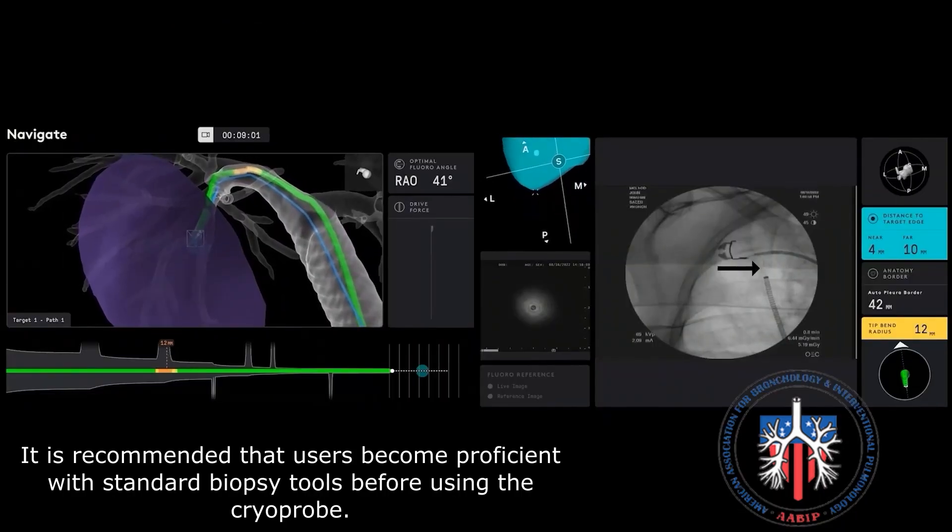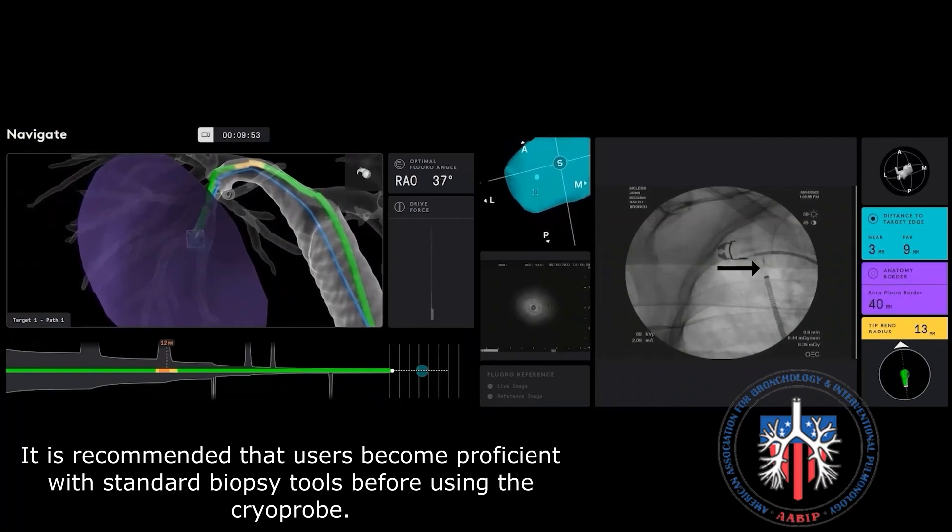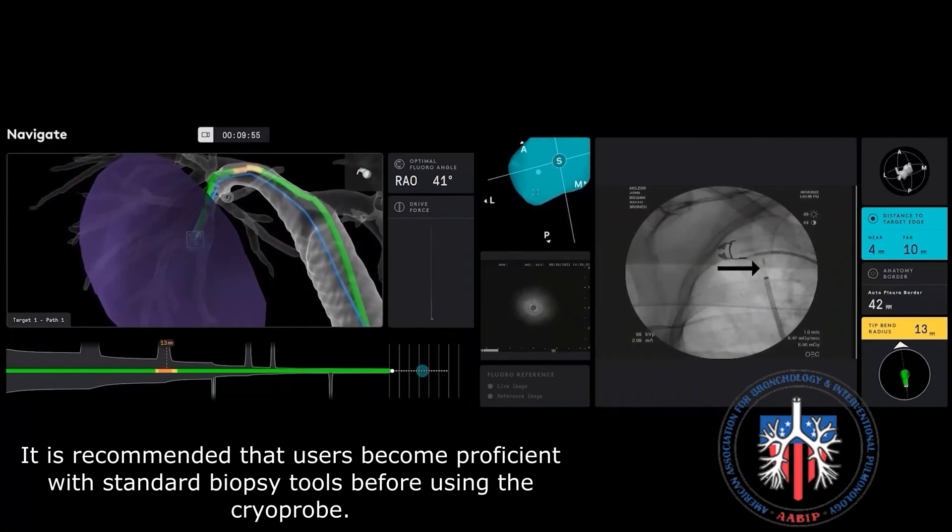In this example, we are using a 1.1 mm cryoprobe for biopsies of the right upper lobe pulmonary nodule.